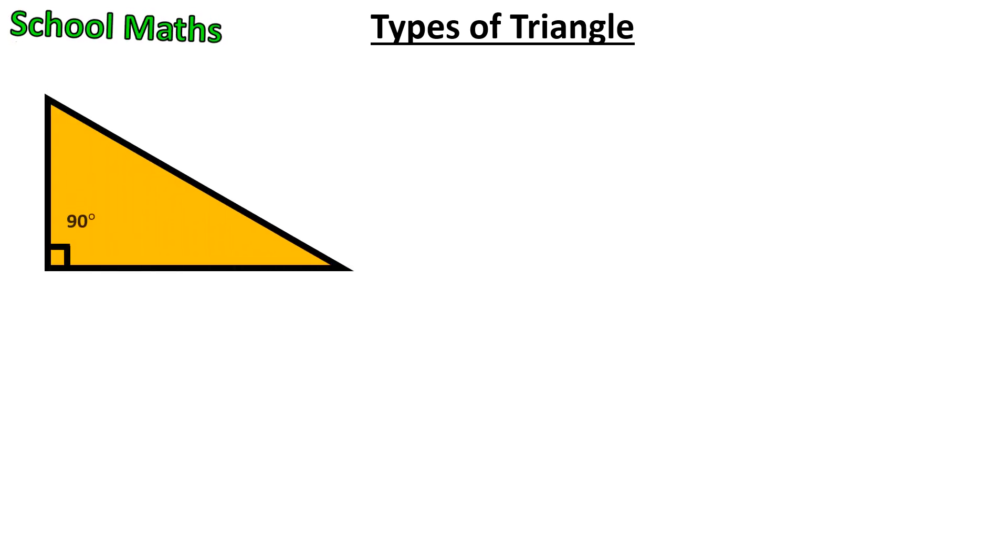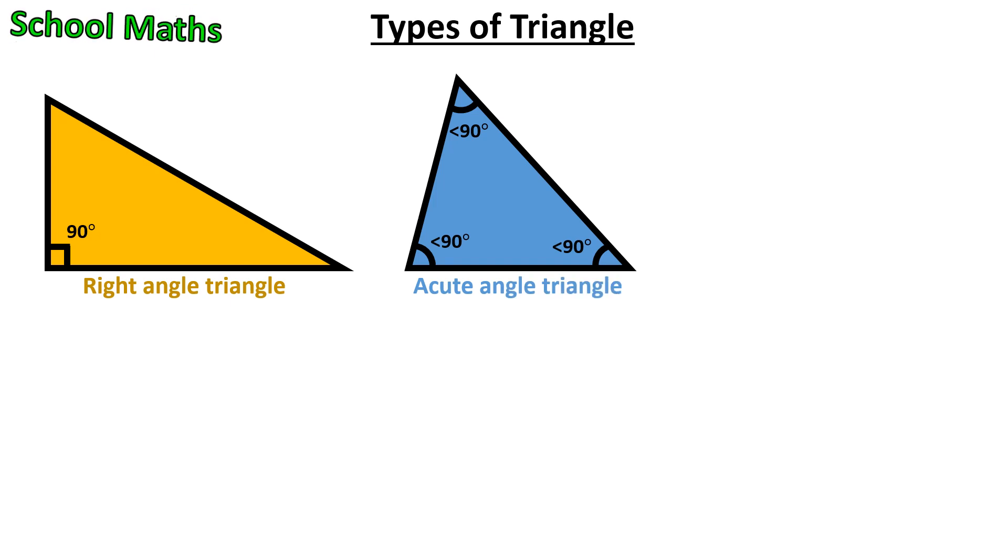Now I will tell you the rules for drawing this triangle. Rule for Right Angle Triangle is one of the internal angles must be 90 degrees. Rule for Acute Angle Triangle is all the internal angles must be less than 90 degrees.